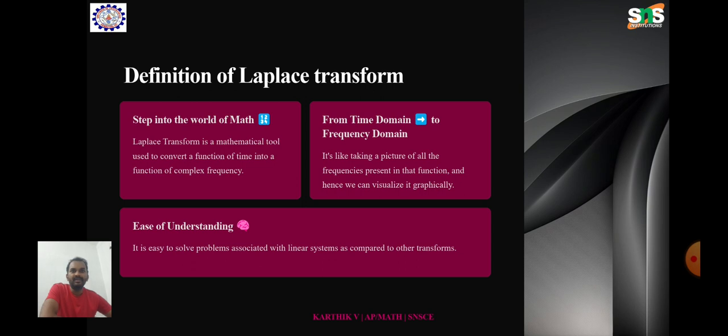The result of the Laplace Transform is often represented in terms of the complex variable s, which is usually written as sigma plus j omega.